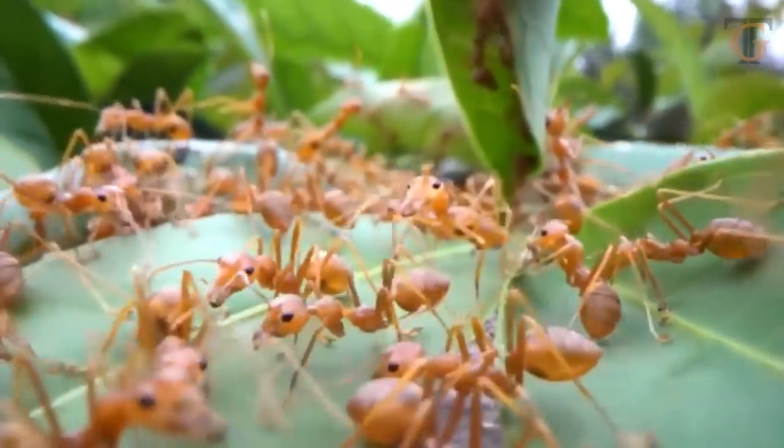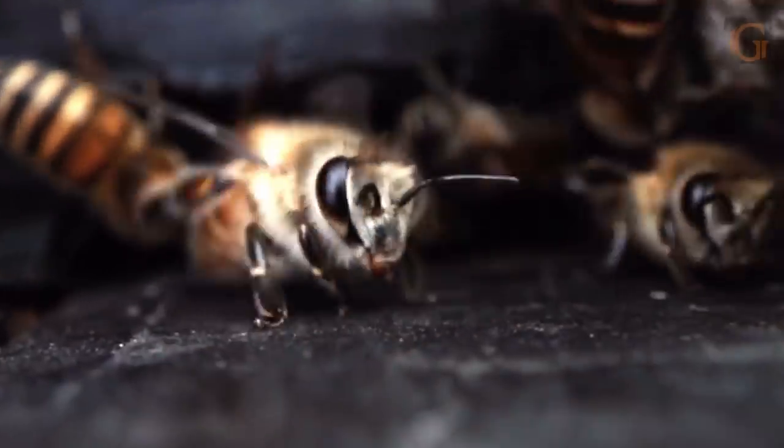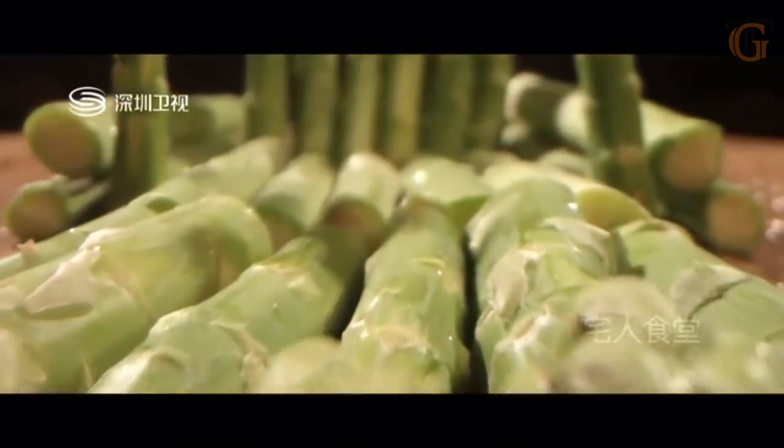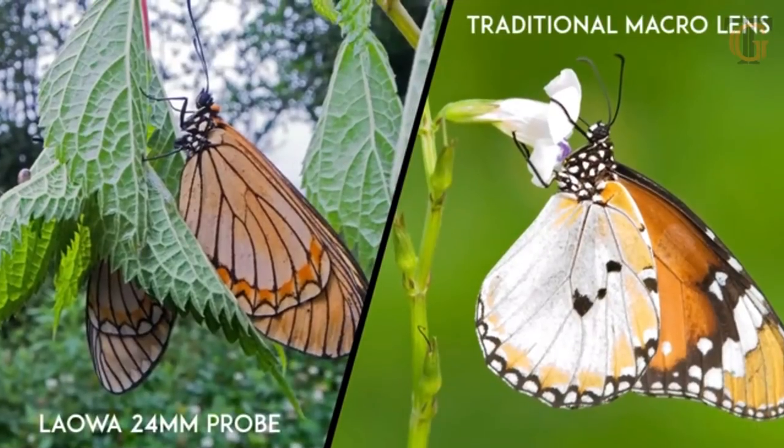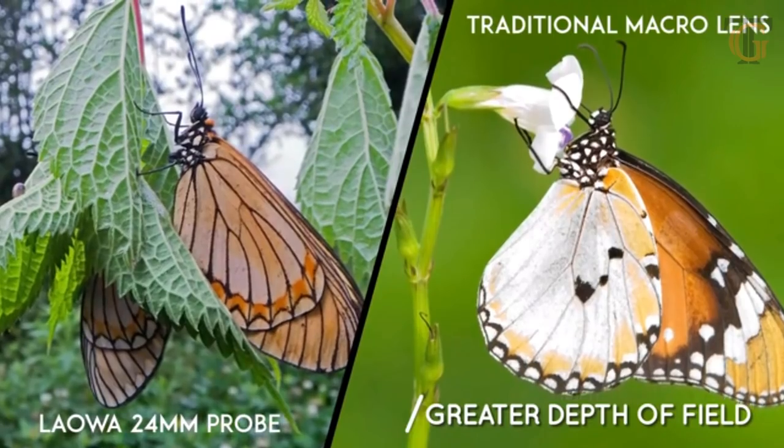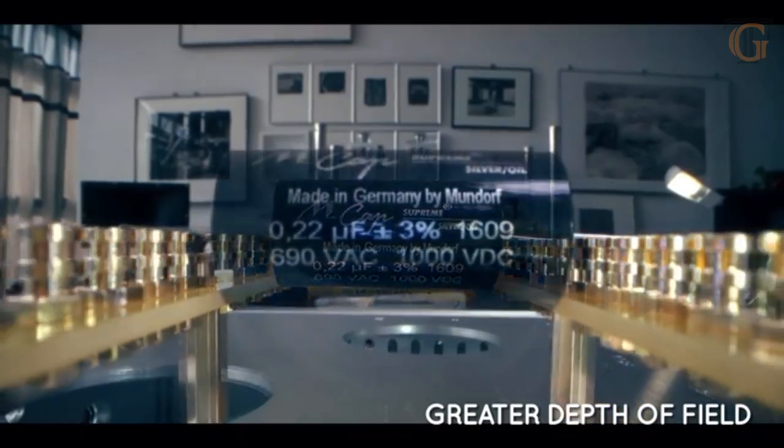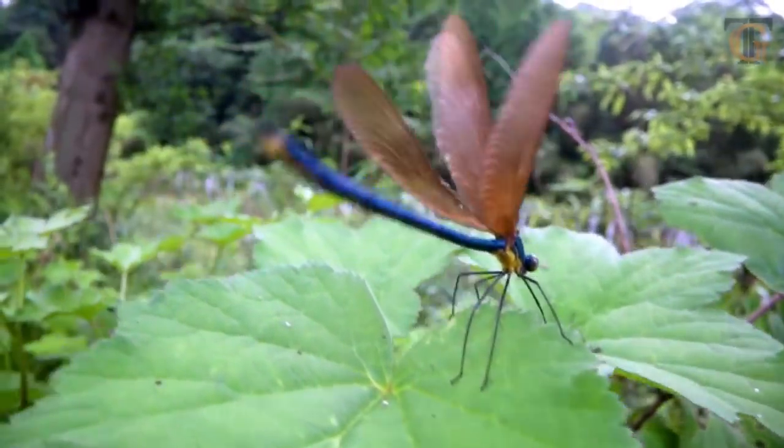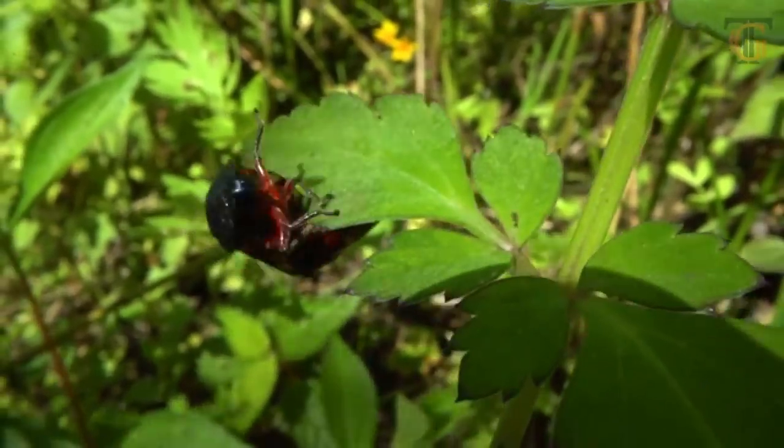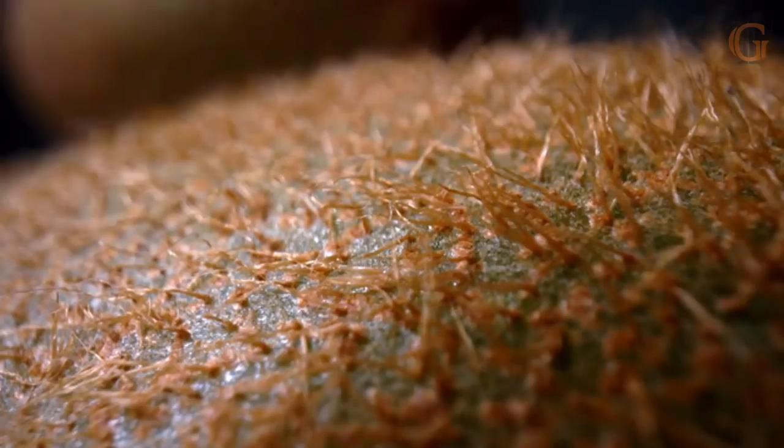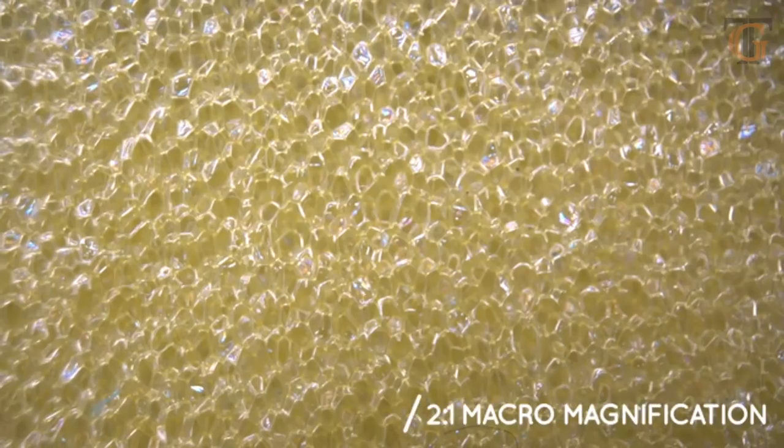For the first time ever, you can easily create a compelling and unique bug-eye perspective style that no other lenses can compare to. The wide angle design also means you get much more depth of field than a telephoto macro lens when focusing at close distances. You can start including the habitat or environment of the subject into your composition since more of your shot will be in focus. Your image can instantly become very informative and appealing.